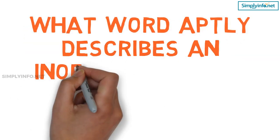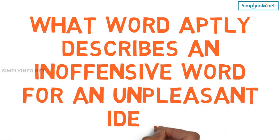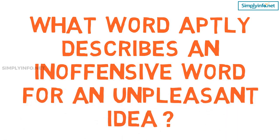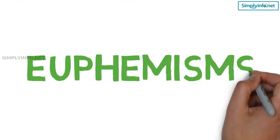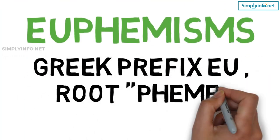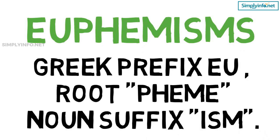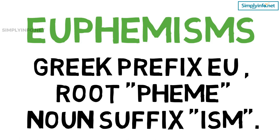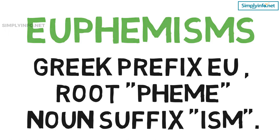What word aptly describes an inoffensive word for an unpleasant idea? Euphemism. A euphemism is a word or expression that has been substituted for another that is likely to offend. It is built on the Greek prefix 'eu,' which means good, and the root 'pheme,' which means voice or speech, and the noun suffix '-ism' — etymologically, something said in a good voice.